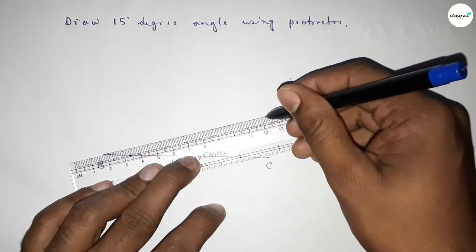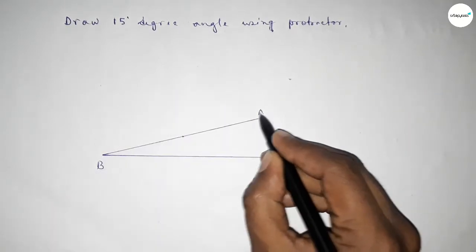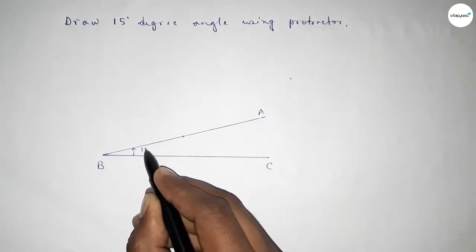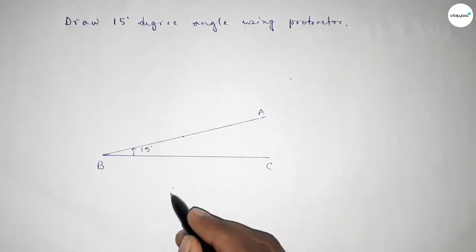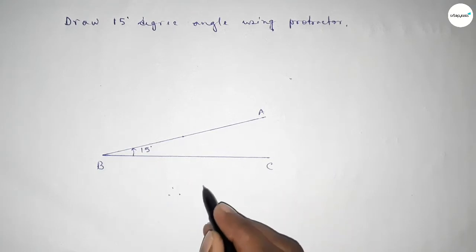And taking here point A. So angle ABC, this is 15 degrees.